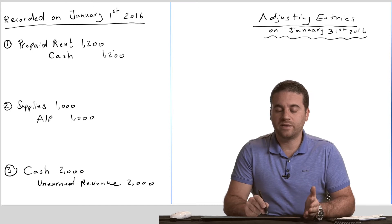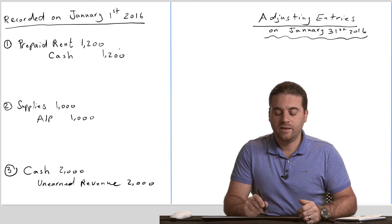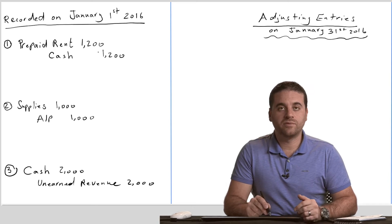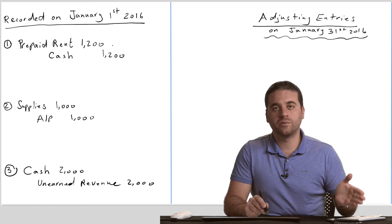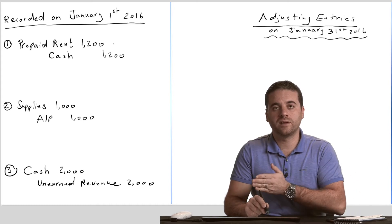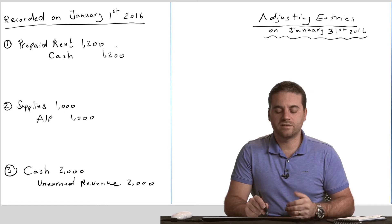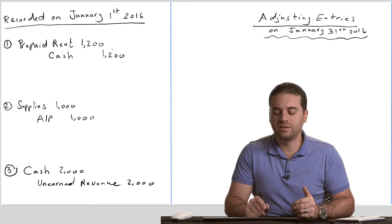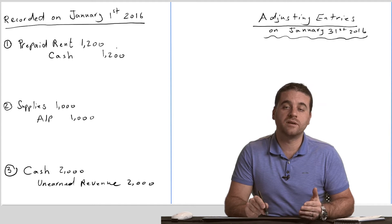Of course not, because the reason we paid that money is to start consuming it over time. Let's say the $1,200 was prepaid for a year for 2016, starting from January 1st until December 31st. If we make a simple calculation and consider that the cost for rent is the same every month, we divide $1,200 by 12, which gives us $100 per month.